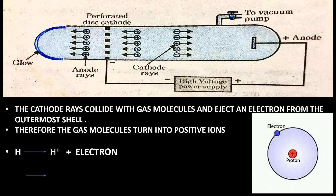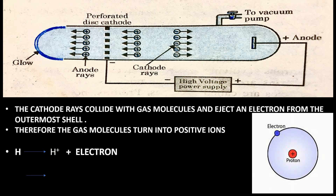After the hydrogen atoms turn into positive hydrogen ions, many H+ ions come together and form the anode rays. So, if many H+ ions are coming together and forming anode rays, the smallest particle of anode rays is nothing but H+. Just as many small atoms come together to form an object, this anode ray is formed by many H+ ions.